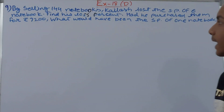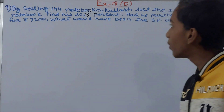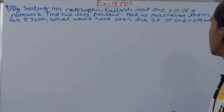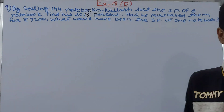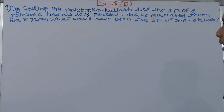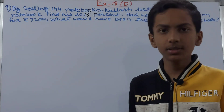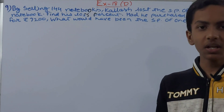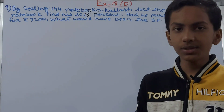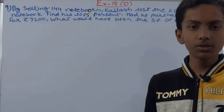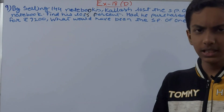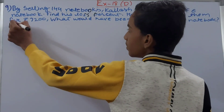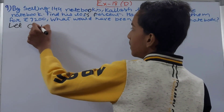First of all, note that by selling 144 notebooks, Kailash lost the CP of 6 notebooks. Whenever these types of questions come, the foremost thing you can do is assume the cost price as Rs. 1. There are other methods to do this as well, but this one is a bit easier. So let the cost price be Rs. 1.